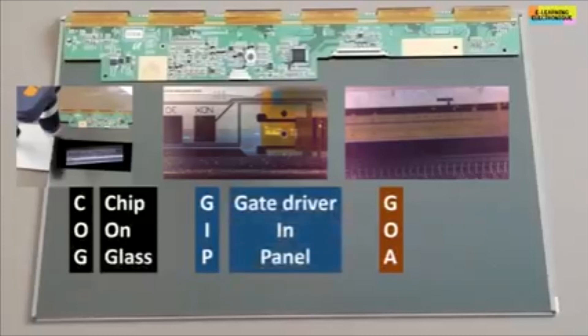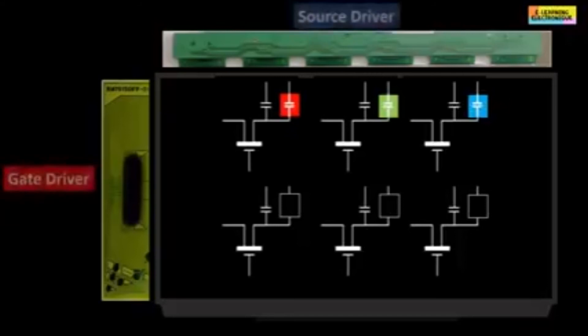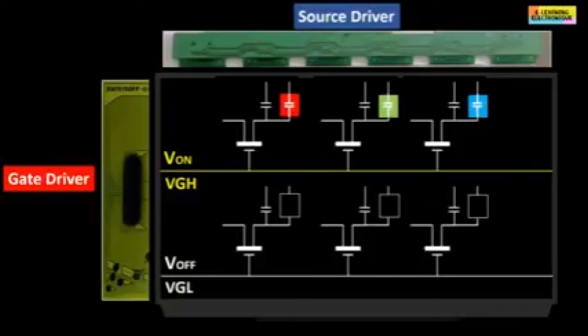The gate drivers are used to drive the TFT through their gate. They control the passage or not of the voltage that feeds all the gates on the same line. The transistors are in ON state when their gate is supplied with VGH; they are in OFF state if their gate is subjected to VGL.